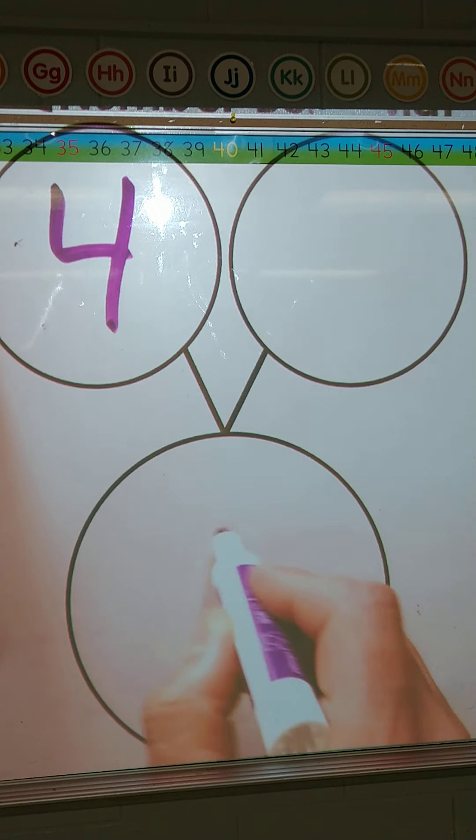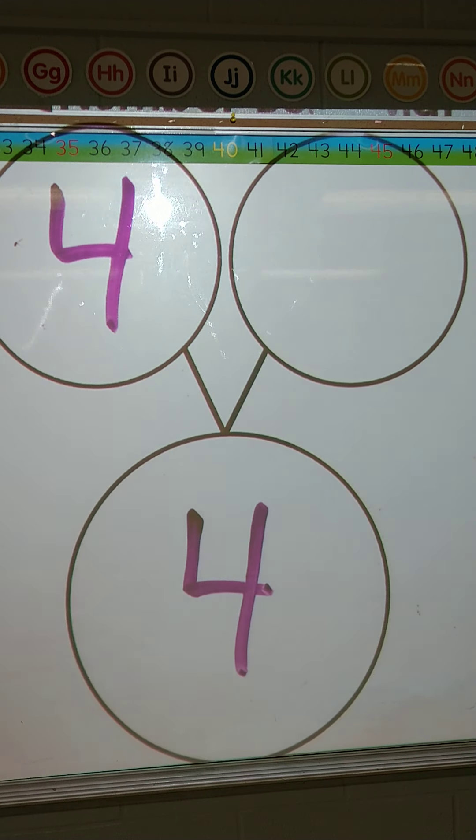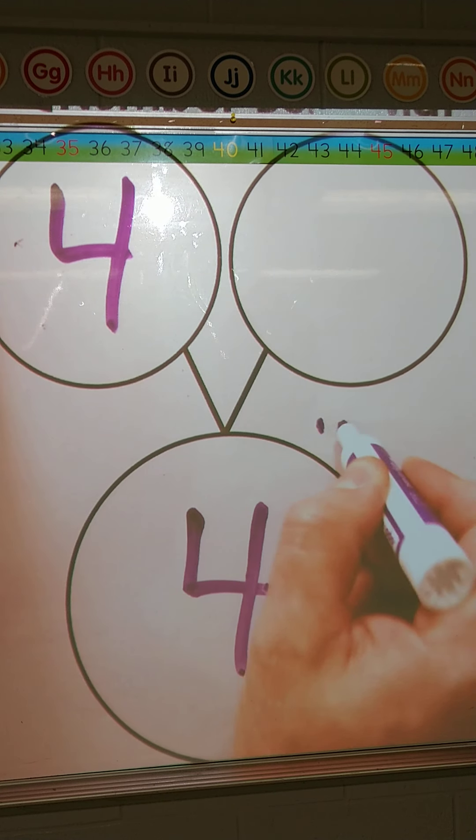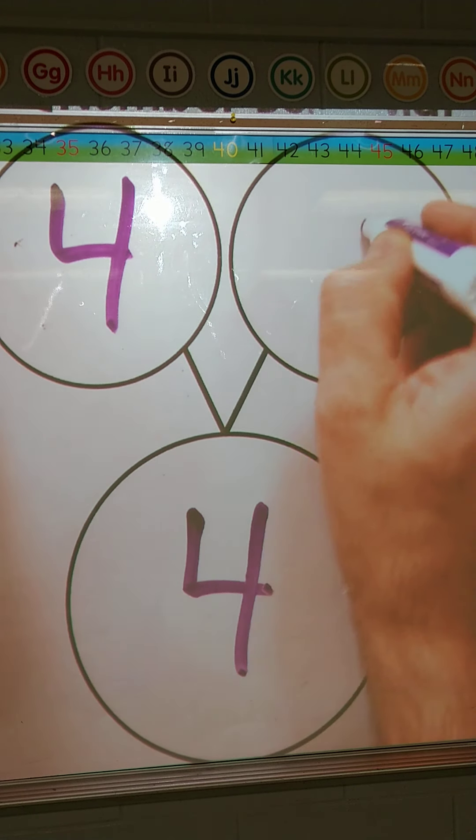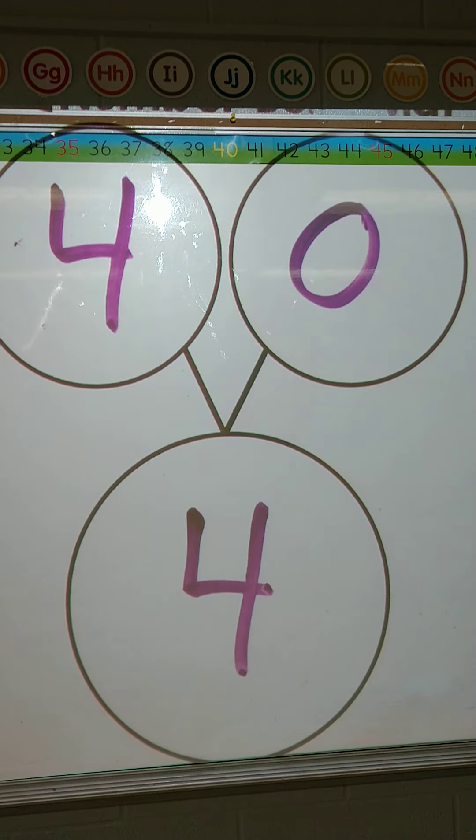4 and 4. Oh no. So we have part of, the whole is 4, the part is 4. So what is the other part? 1, 2, 3, 4. And then we take away 4, we have 0 left. So sometimes those 0's are tricky. So part, part, whole.